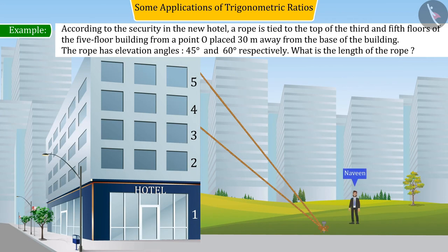According to the security in the new hotel, a rope is tied to the top of the third and fifth floors of the five-floor building from a point O placed 30 meters away from the base of the building. The rope has elevation angles from point O at 45 degrees and 60 degrees respectively.